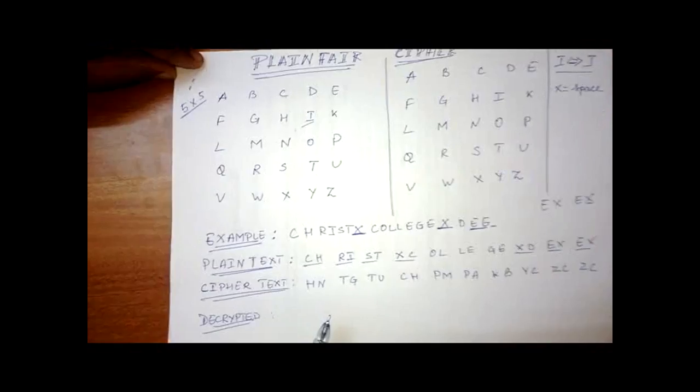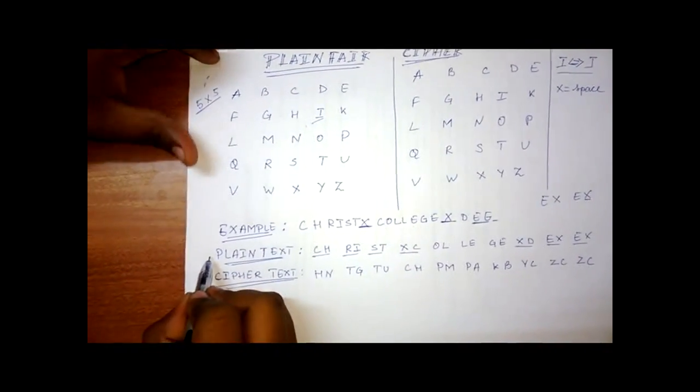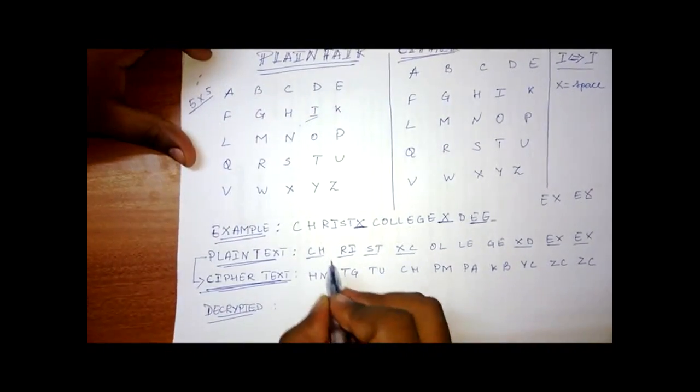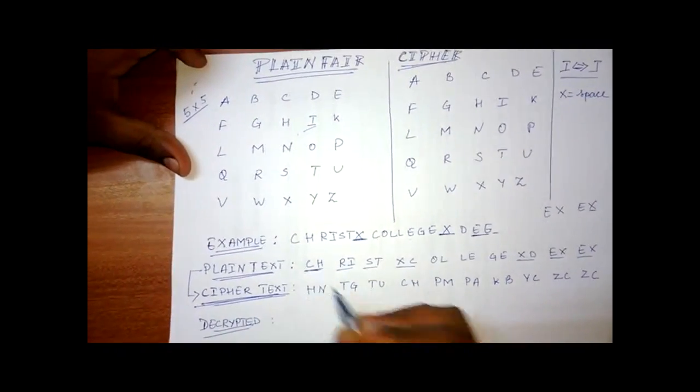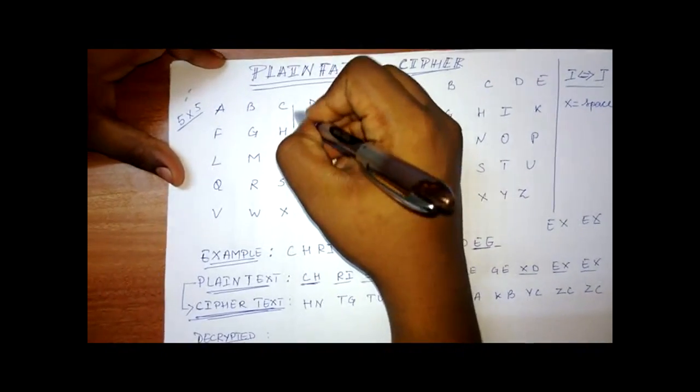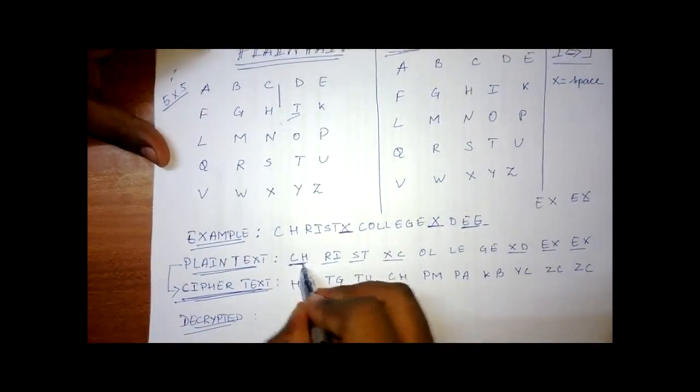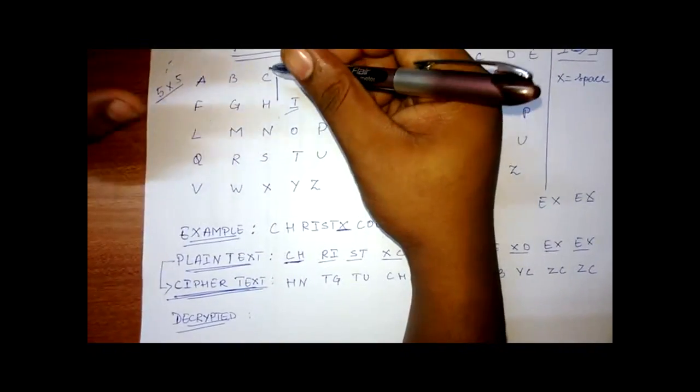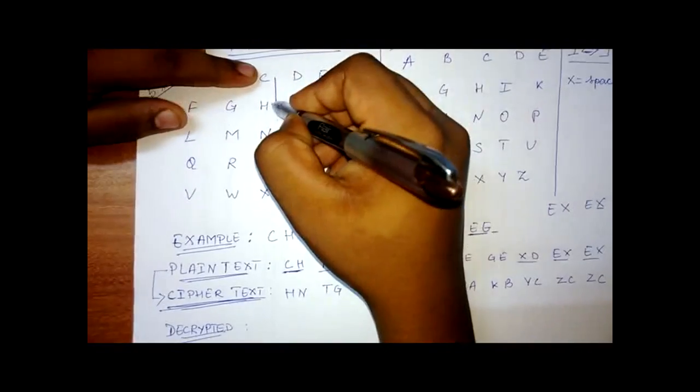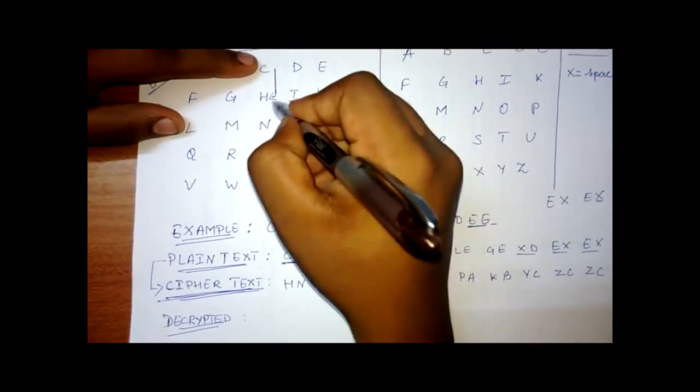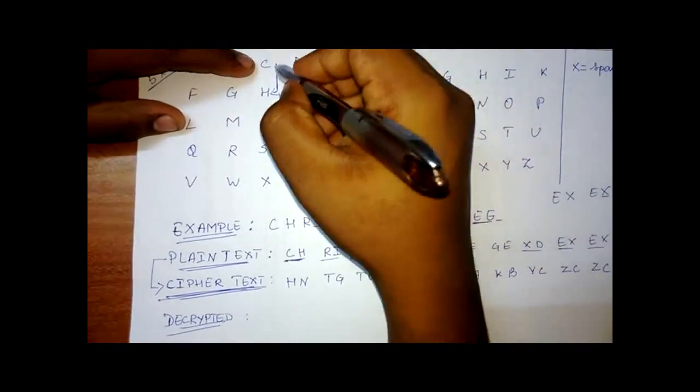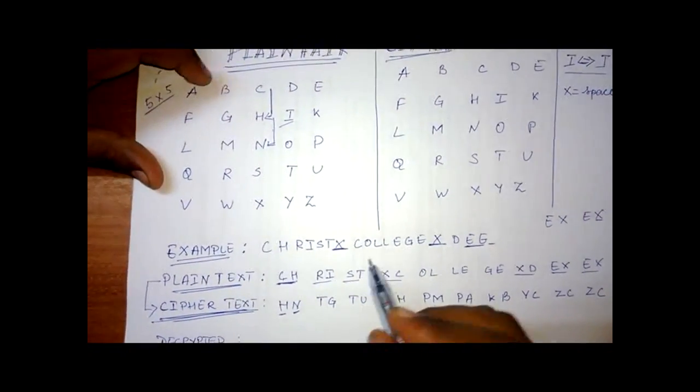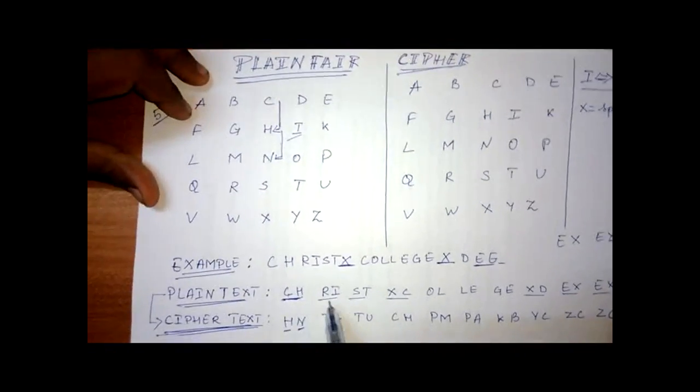Okay. Now coming to convert the plain text to the code, the cipher text. So for example, the first one CH. So we see CH coming in the same column. When we have words coming in the same column, we will come one step down. So C becomes H and H becomes N. So C becomes H and H becomes N.